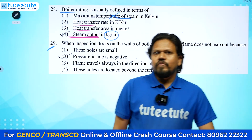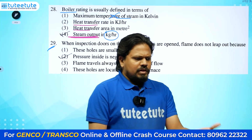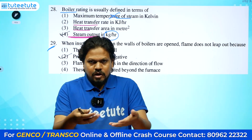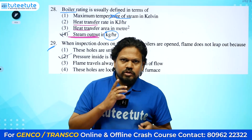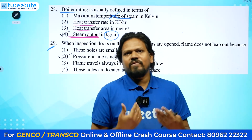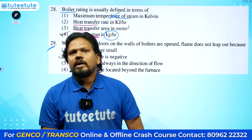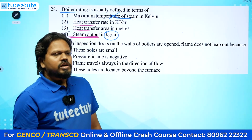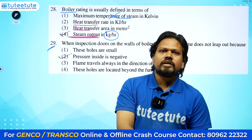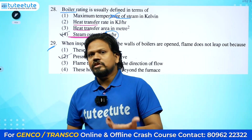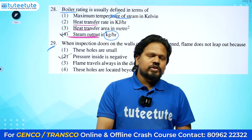Next: when inspection doors on the walls of a boiler are opened, the flame does not leap out. Consider the boiler — you need to inspect whether the combustion process is happening properly. Even though there is a gap, the flame does not come out. This is because forced air is being sent in, creating a negative pressure inside.